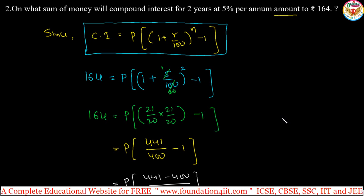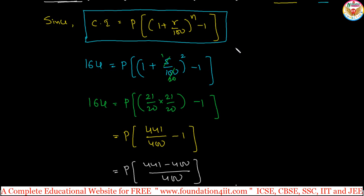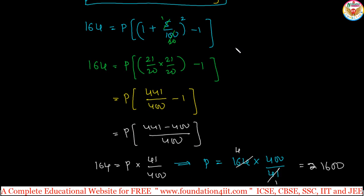To repeat the question clearly: on what sum of money will compound interest for 2 years at 5 percent per annum amount to 164? Here compound interest is given, so we find the P value, which is 1600. The key point is to read the question carefully and substitute the data correctly into the right formula. Similarly, we will see a few more sums to find the rate percent and number of years as well.